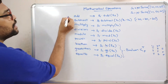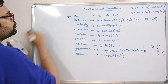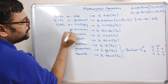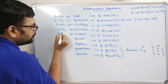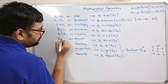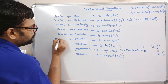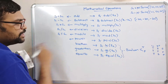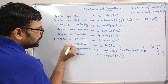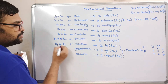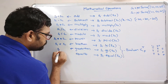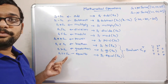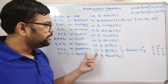We don't have to use only the functions — we can also use operators directly. For addition: s1 + s2. For subtraction: s1 - s2. For multiplication: s1 * s2. For division: s1 / s2. For modulo: s1 % s2. For power: s1 ** s2. For less than: s1 < s2. For greater than: s1 > s2. For equal to: s1 == s2.